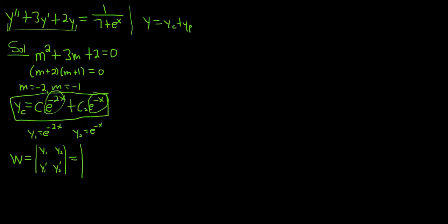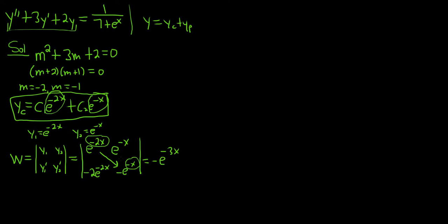In the first row we have the functions: e to the negative 2x and e to the negative x. In the second row we have the derivatives. Taking the derivative of e to the negative 2x using the chain rule gives negative 2e to the negative 2x; likewise, e to the negative x gives negative e to the negative x. We multiply diagonally: this times this gives negative e to the negative 3x — since negative 2x plus negative x is negative 3x — then minus, and the other diagonal gives plus 2e to the negative 3x. Adding these gives e to the negative 3x.